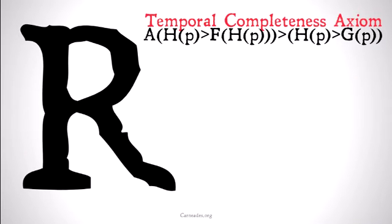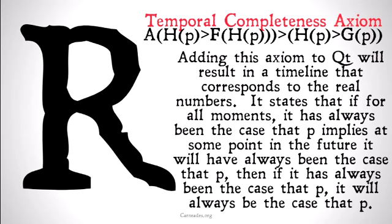Our temporal completeness axiom is a little confusing, and we're not going to go through a proof of why this demonstrates that our timeline is complete right now, as it would take us far off track. If you want to look up proofs, check it out yourselves, but understand that this axiom is generally taken to show that a timeline is complete. Basically, it says: for all moments past, present, and future, it has always been the case that P implies at some point in the future it will have been the case that P — then, if it has always been the case that P, it will always be the case that P. Adding this axiom to QT provides us with RT, a timeline whose instances correspond to the real numbers instead of just the rational numbers, giving us a complete timeline.